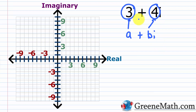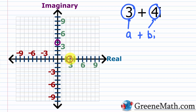To plot three plus four i on the complex plane, it's just like plotting the point (3, 4) on the coordinate plane we're used to working with. I basically want to think about a real location of three — that's here — and an imaginary location of four, so go up four units — that's here. What's the meeting point between those two? Three units to the right on the real axis and four units up on the imaginary axis — that's the point three plus four i.